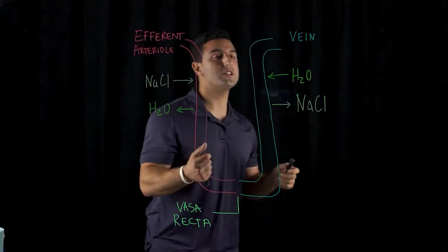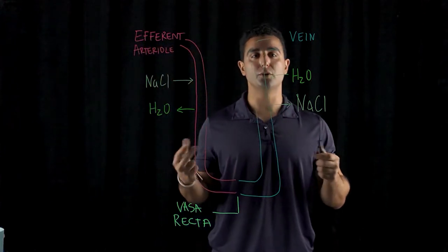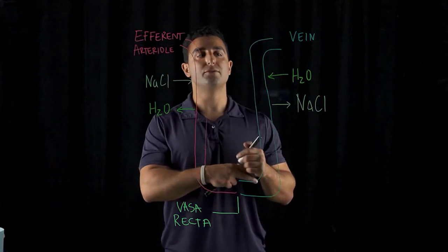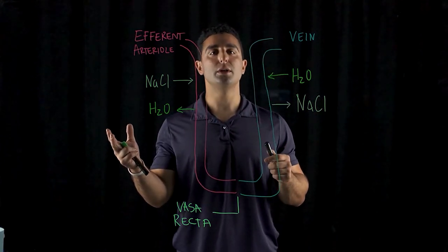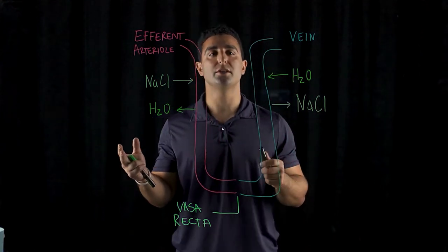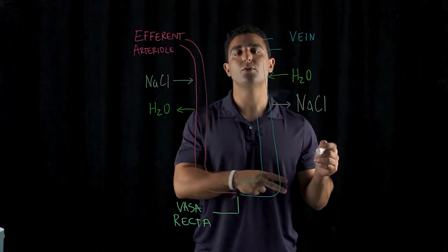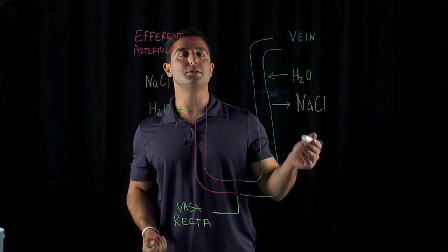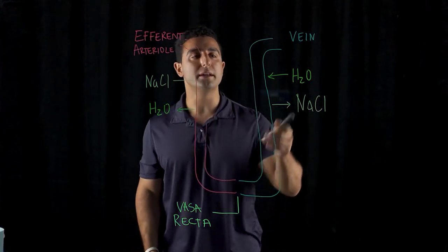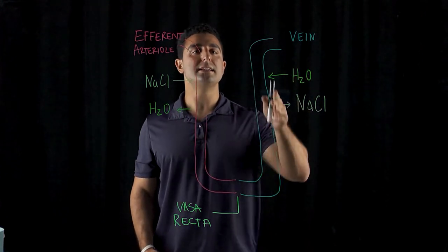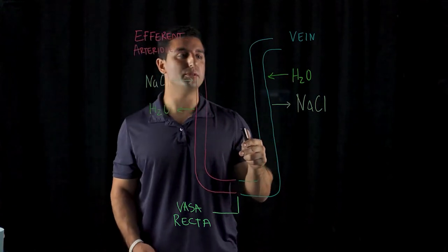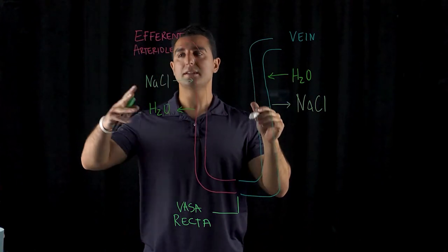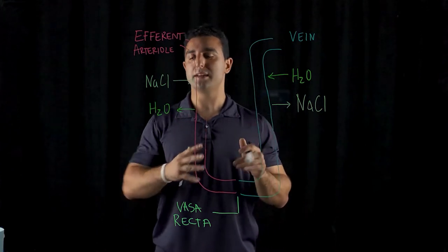Remember before, they were responsible for the countercurrent multiplier, where they allow for the passive reabsorption of water into the extracellular fluid, or the active transport where the potassium, sodium, and chlorine in the ascending loop of Henle comes into the extracellular fluid. So the vasa recta and the loop of Henle work side by side.